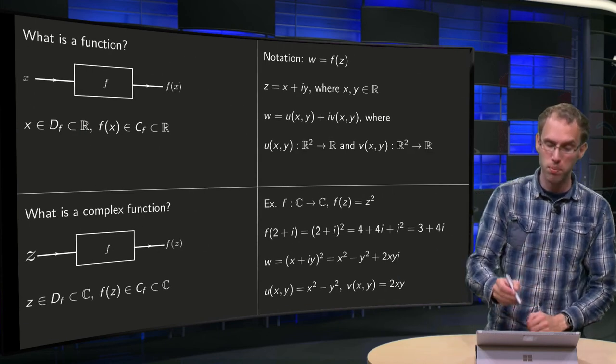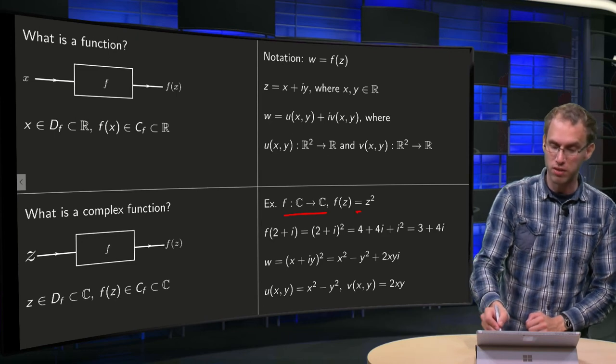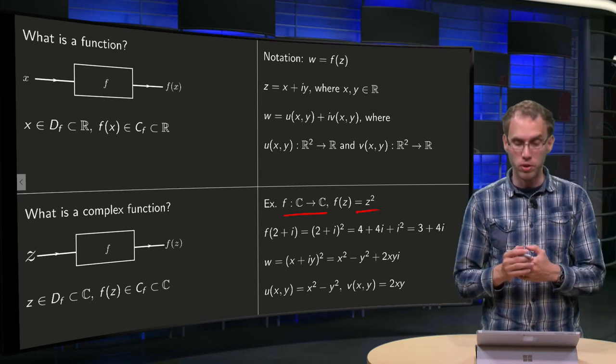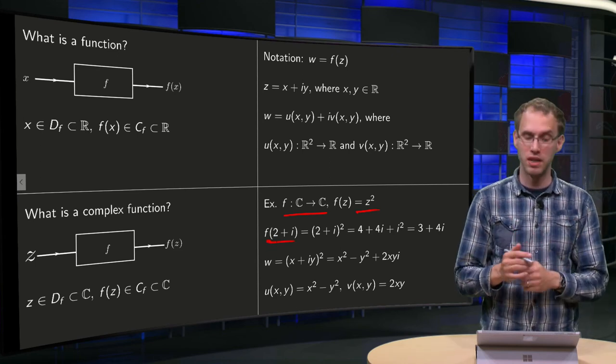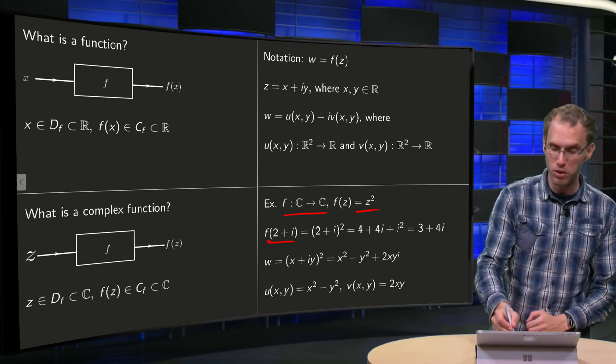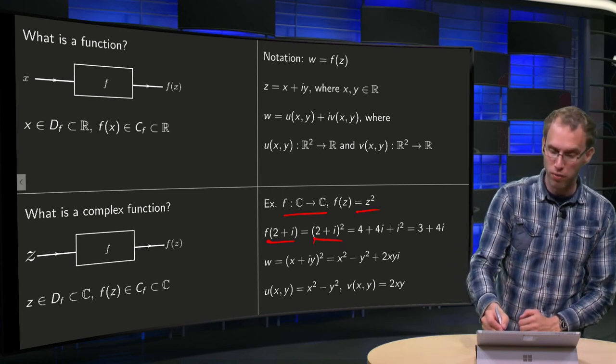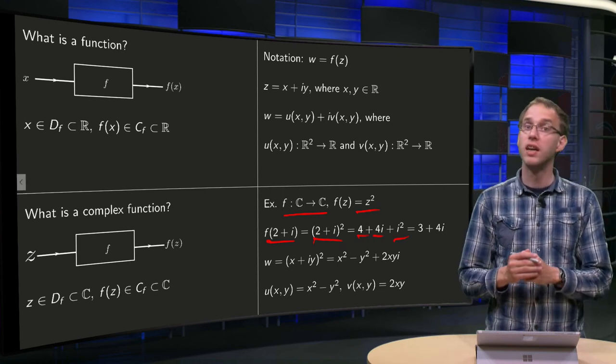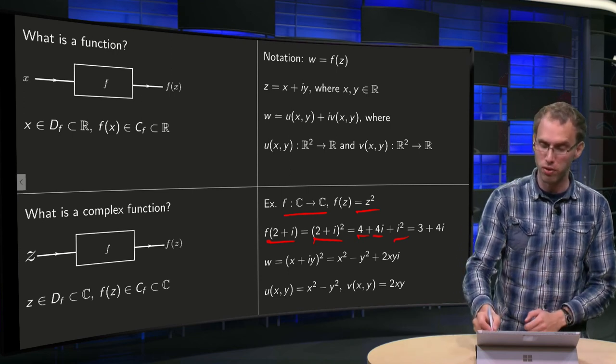Let's take a look at an example: function f from C to C, f(z) equals z squared. What does that mean? If you have 2 plus i, for example, what will be the image of that? The image of 2 plus i will be (2 plus i) squared. We can work out the brackets, so we get 4 plus 4i plus i squared equals 4 plus 4i minus 1, which is 3 plus 4i.